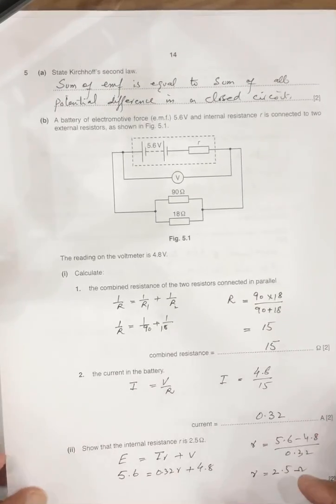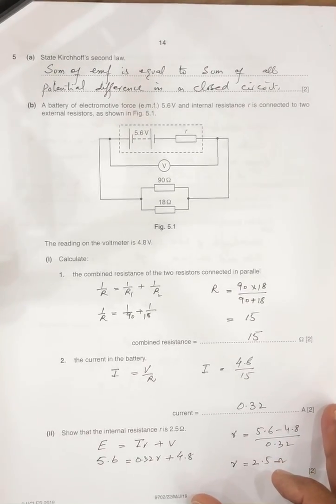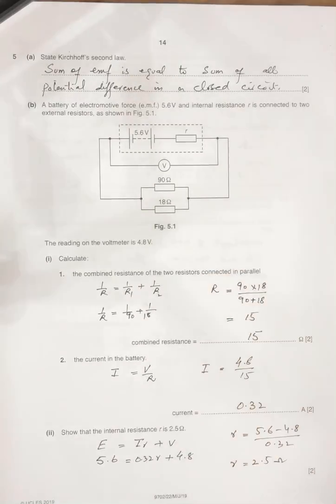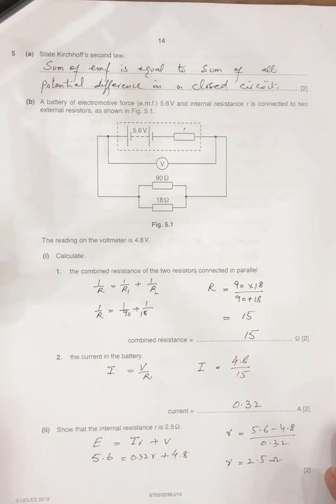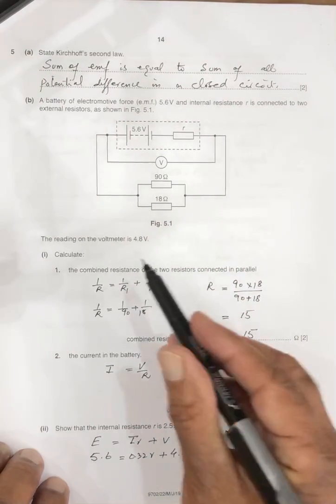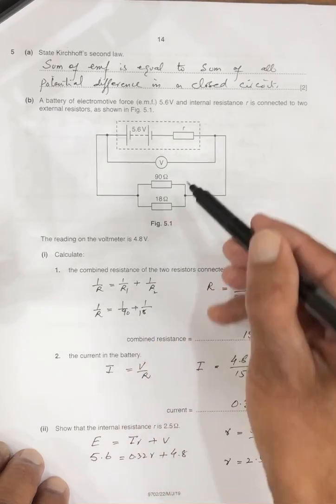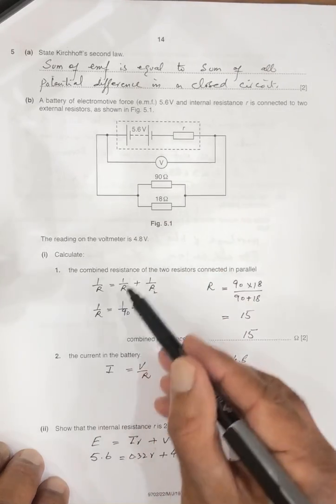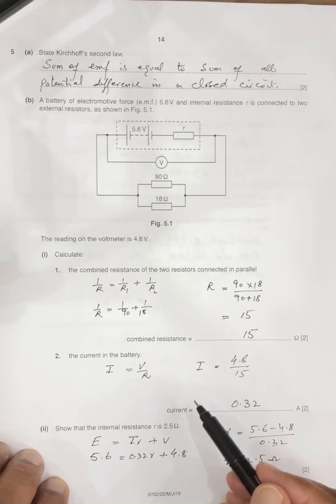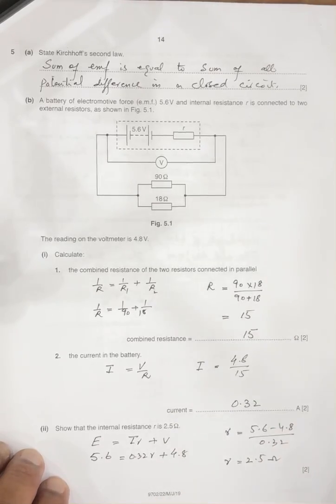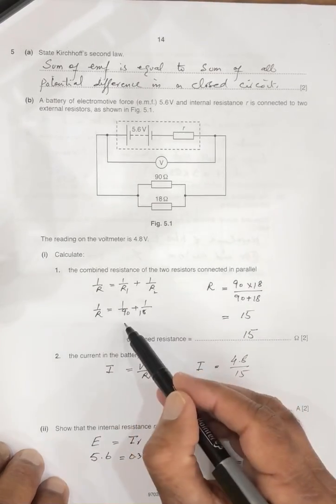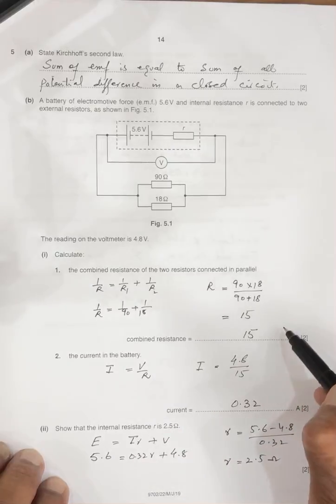Next question is about the electricity. State the Kirchhoff second law. Sum of the EMF is equal to the sum of the all potential differences in the closed circuit. So there's a question. Now, the question is calculate the combined resistance. So they are connected in parallel. 1 over R, 1 over R2, 1 over R3, and so on. This formula. So 1 over R, 1 over 90 plus 1 over 18, so answer is 15.